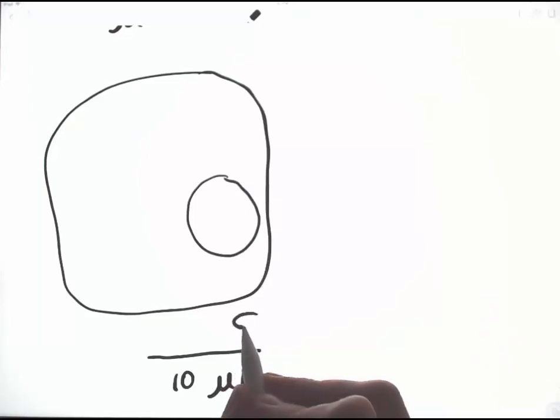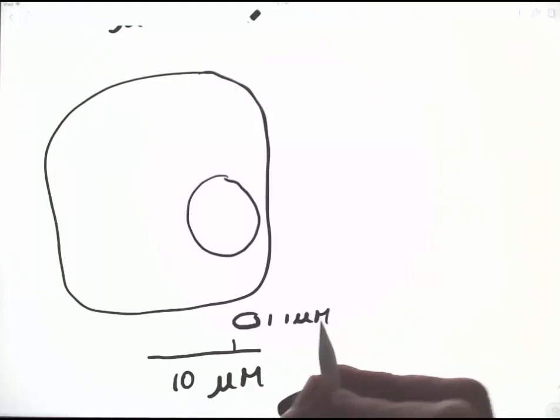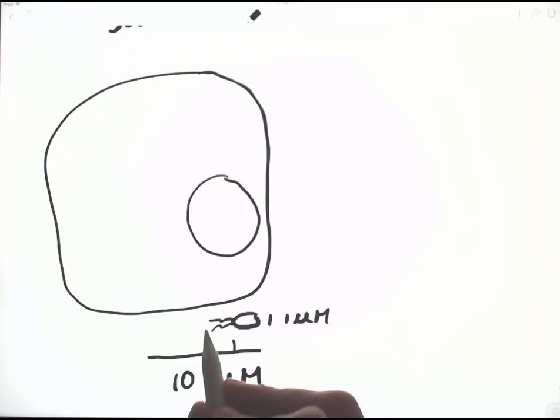If we put an E. coli next to it, that E. coli would be about 2 microns long and about 1 micron wide. Here are a couple of the flagella on an E. coli.